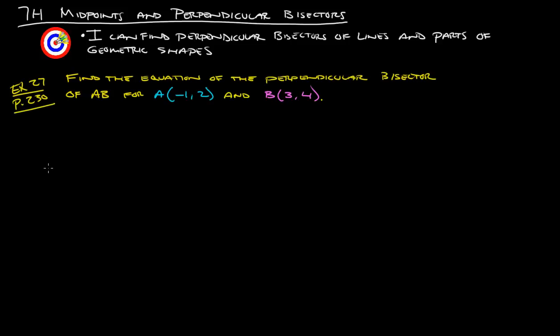That is going to be example 27 from page 230. We're going to find the equation of the perpendicular bisector of AB for point A, which is at (-1, 2), and for point B, which is at (3, 4). First thing, let's graph that. We've got these two points here. Then let's graph the line that goes between those two points, or through those two points.